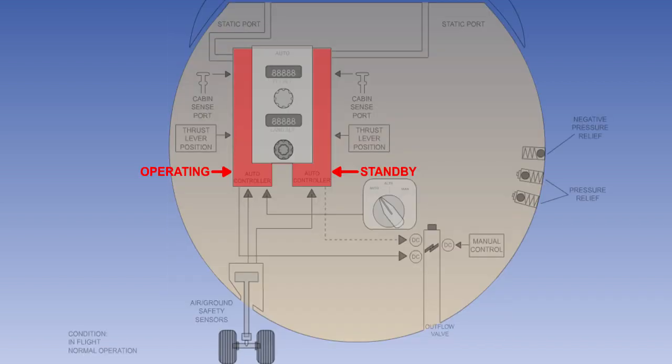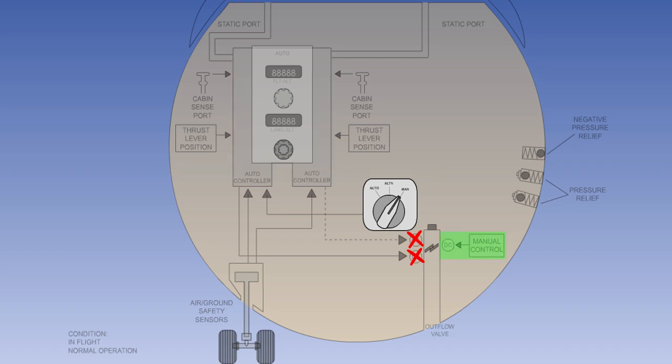In auto mode, one of the two automatic pressurization controllers will be operating. The pilot can force the system to use the other controller by selecting alternate. Selection of manual will lock out all normal automatic functions and enable the pilot to control the position of the outflow valves.